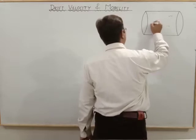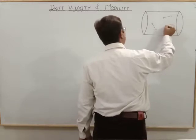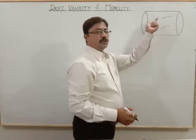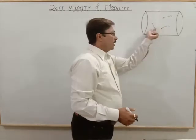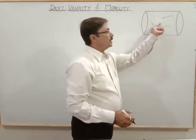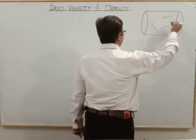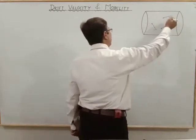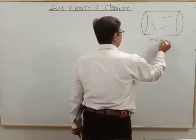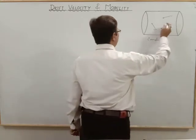They may move in this direction, they may move in that direction, or somewhere else. As you can see, all the electrons are moving randomly — there is no particular direction. This conductor has free electrons undergoing this random motion.